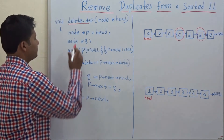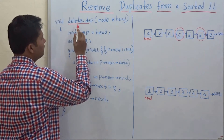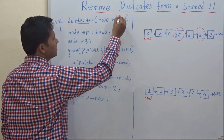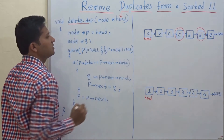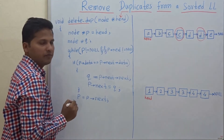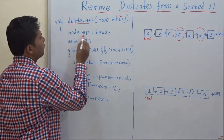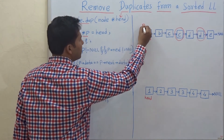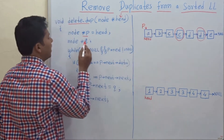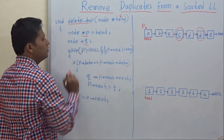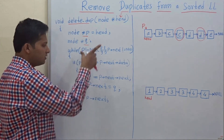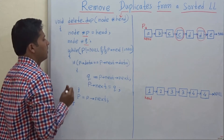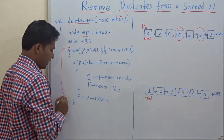The name of the function is delete_duplicates and we have passed the head of the linked list as a parameter. The first pointer P will point to the head of the linked list, and we are declaring Q — I will tell you further in this code the purpose of Q. Now let's go into this while loop.